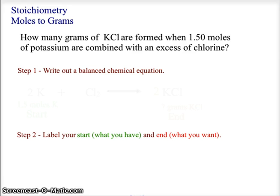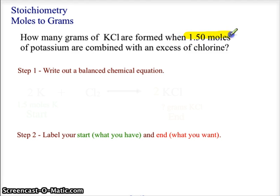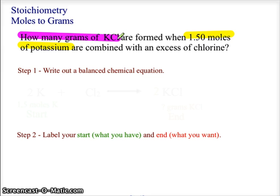The sample problem asks us to find how many grams of KCl are formed when 1.5 moles of potassium are combined with an excess of chlorine. From this we are beginning with 1.5 moles of potassium and we want to find out how many grams of potassium chloride. Before we can begin, we need a balanced chemical equation.